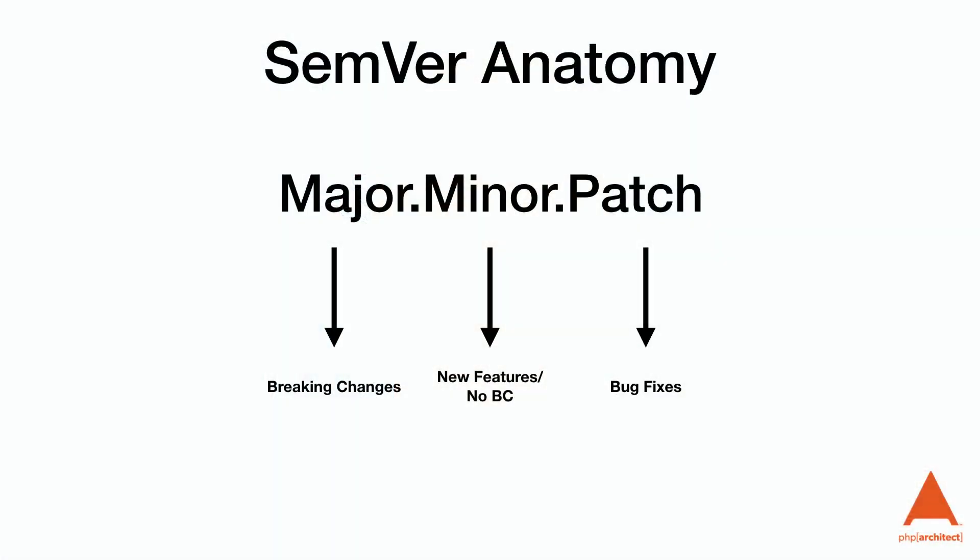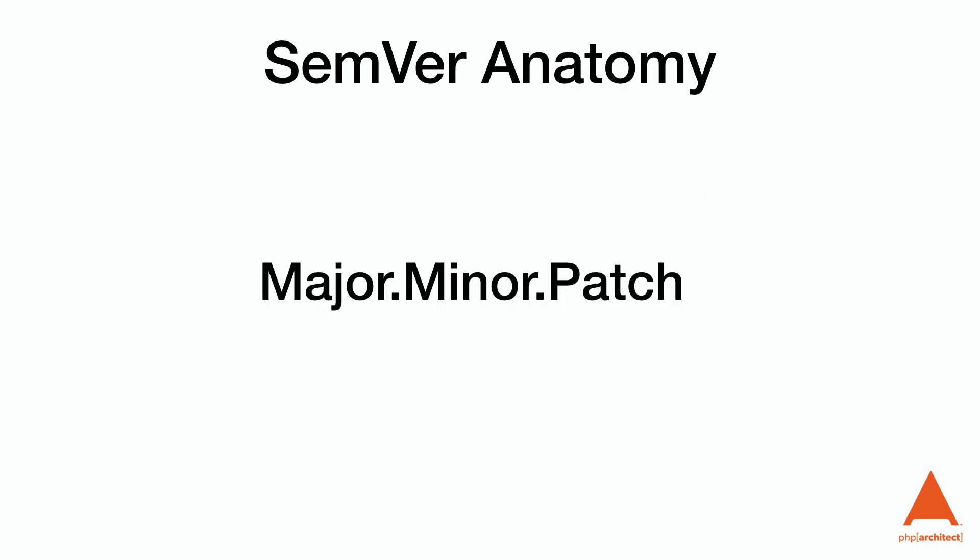The patch level releases are just that — versions of the software that fix a bug or a set of bugs, but don't make any core changes to the logic. There can also be an additional label at the end of the semver version to indicate if it's a pre-release or beta release. In those cases, we would use RC or beta respectively. For example, the PHP core language goes through several beta and pre-release versions before it's finally made into the final release.